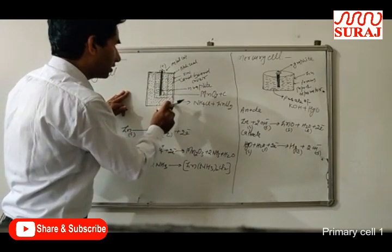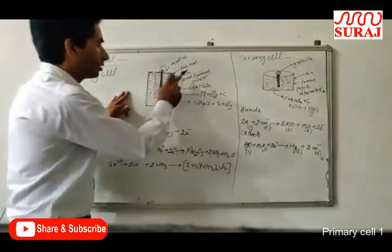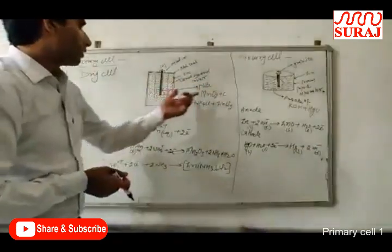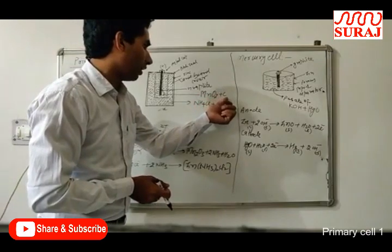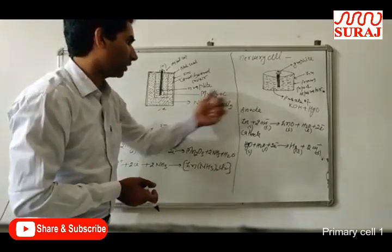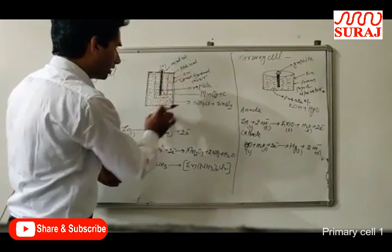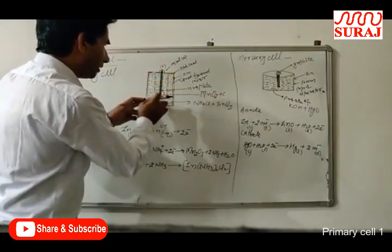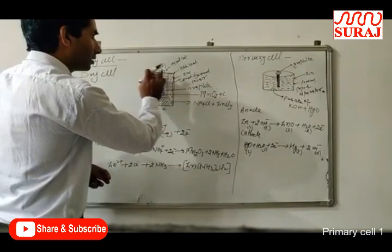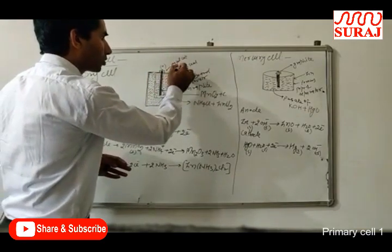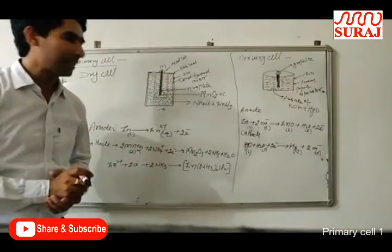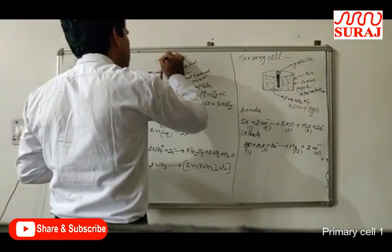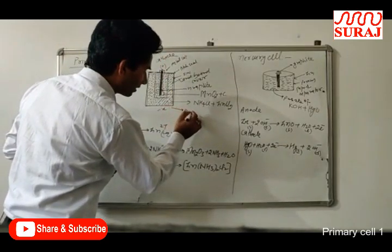The graphite electrode is in contact with a paste of MnO₂ and carbon. The zinc container is in contact with a paste of ammonium chloride and zinc chloride. These two pastes are separated by paper, and the cell is sealed with pitch. The metal cap and graphite electrode act as the cathode, while the zinc container acts as the anode.